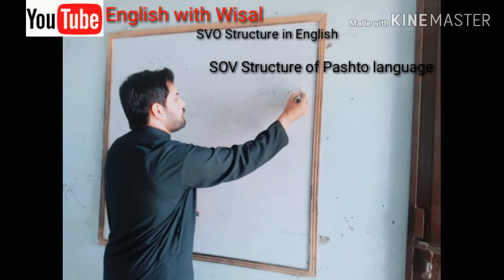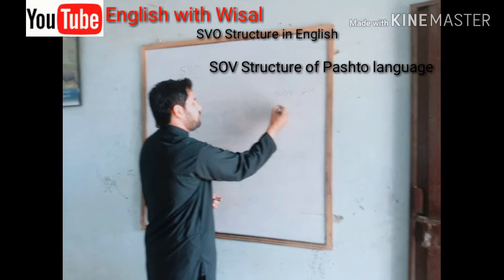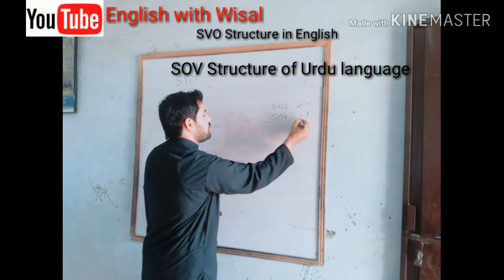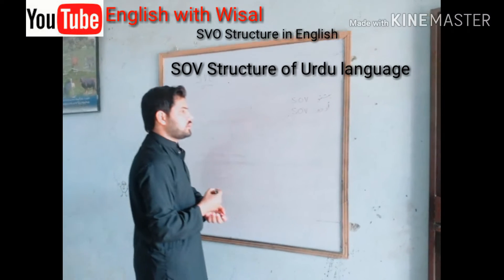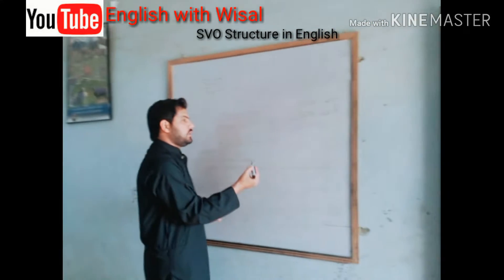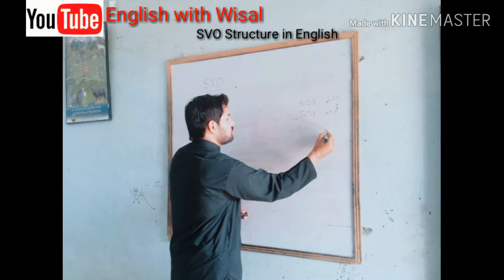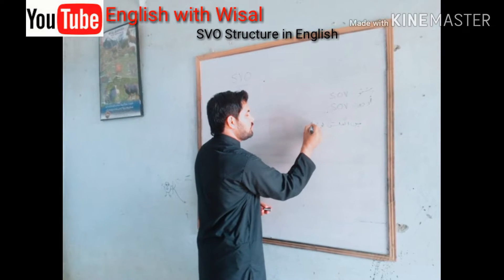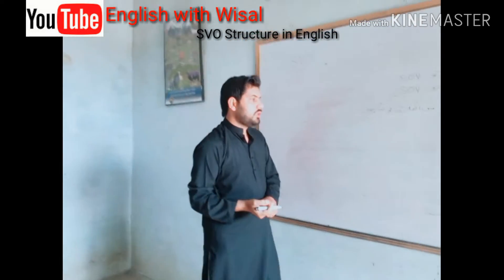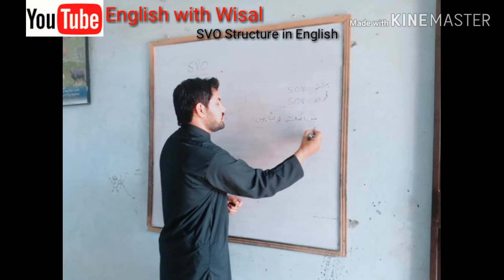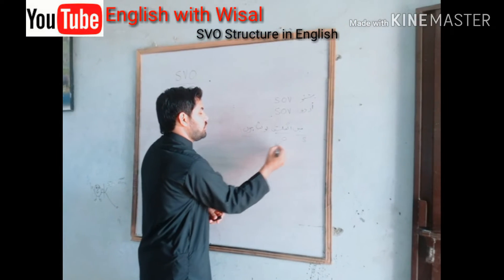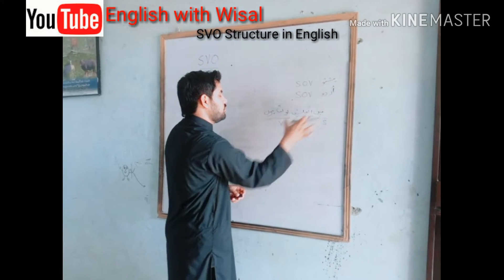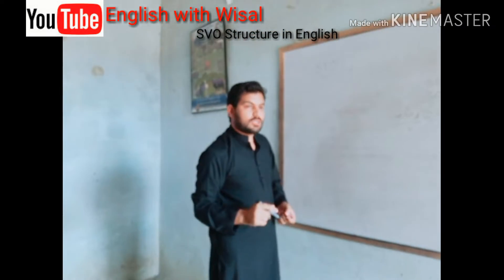That is the structure of Pashto language. And if you analyze the structure of Urdu, that is also the same — S-O-V structure. I will give you an example: 'May English Bolta Hum.' In this sentence, 'May' is the subject, 'English' is the object, and 'Bolta Hum' is the verb. So it has the S-O-V Urdu structure.